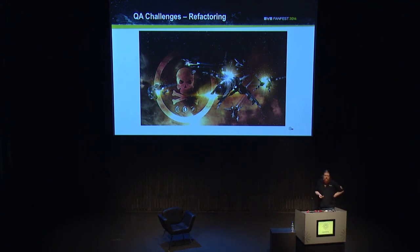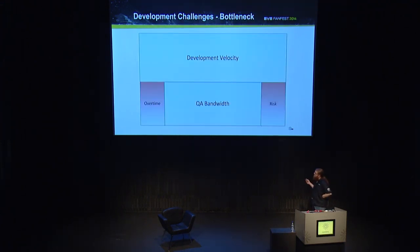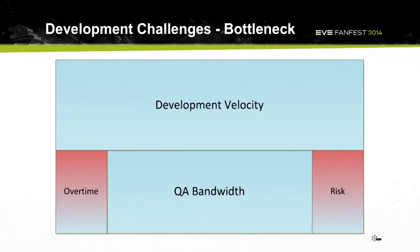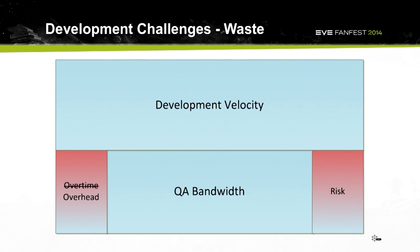Those are QA challenges, but we also have challenges in development. Before whole team quality, QA were the perennial bottleneck of development — development velocity always exceeded QA bandwidth, so QA would have to put in overtime or risk not checking everything thoroughly, which increases the risk of shipping with defects. You might think the easy fix is to hire more QA, but then you replace your overtime problem with the overhead of onboarding and training new staff. So the answer we came up with was whole team quality.